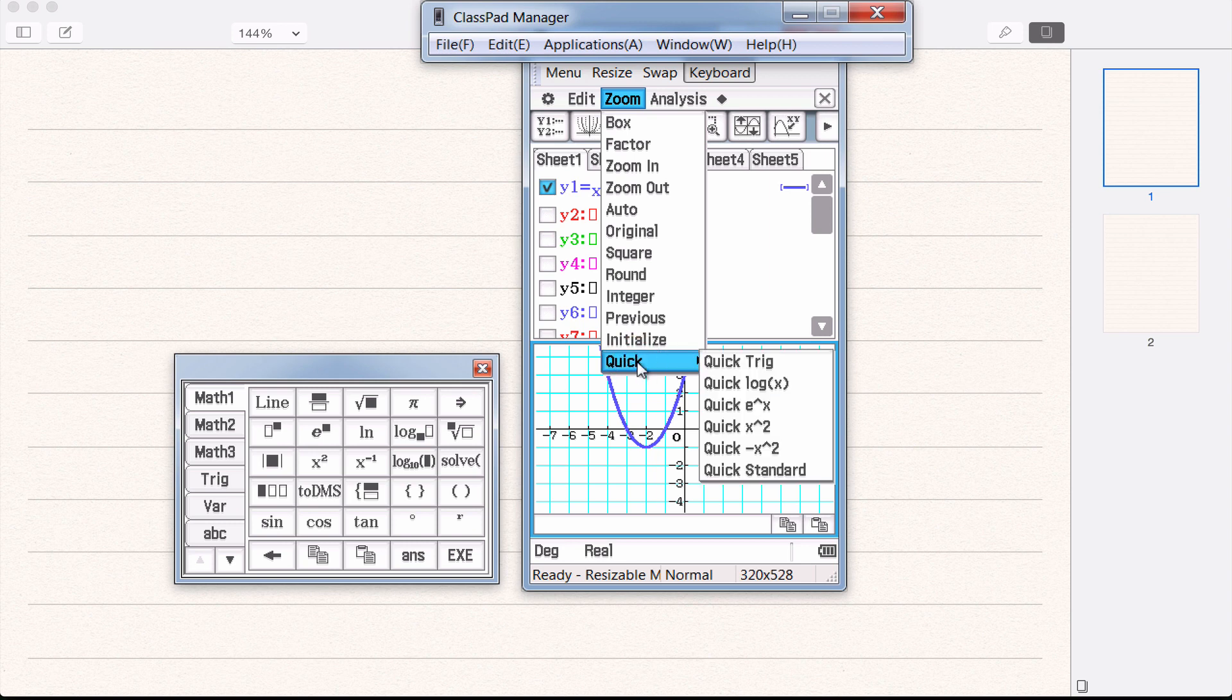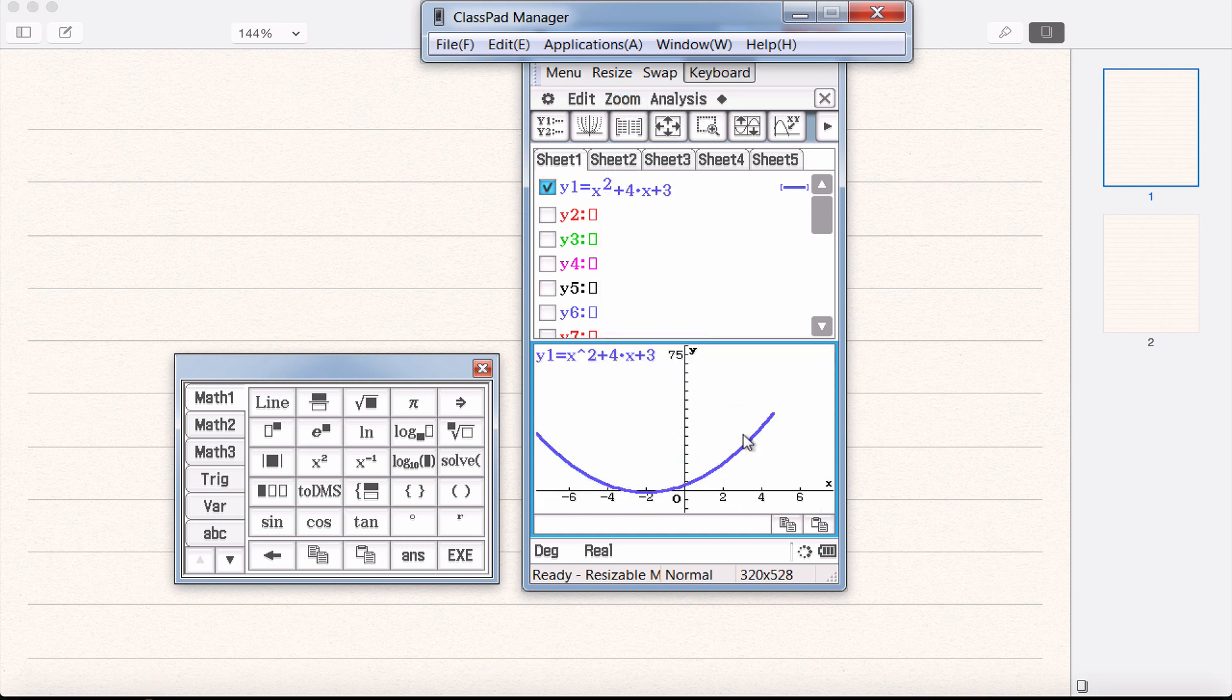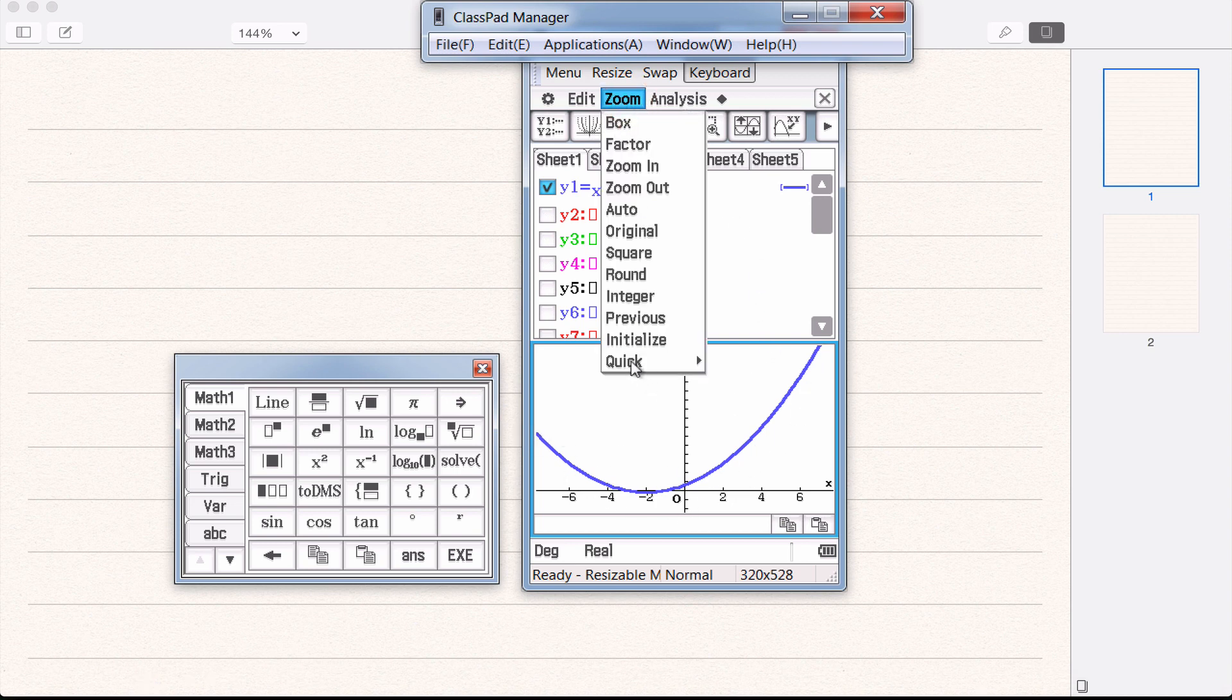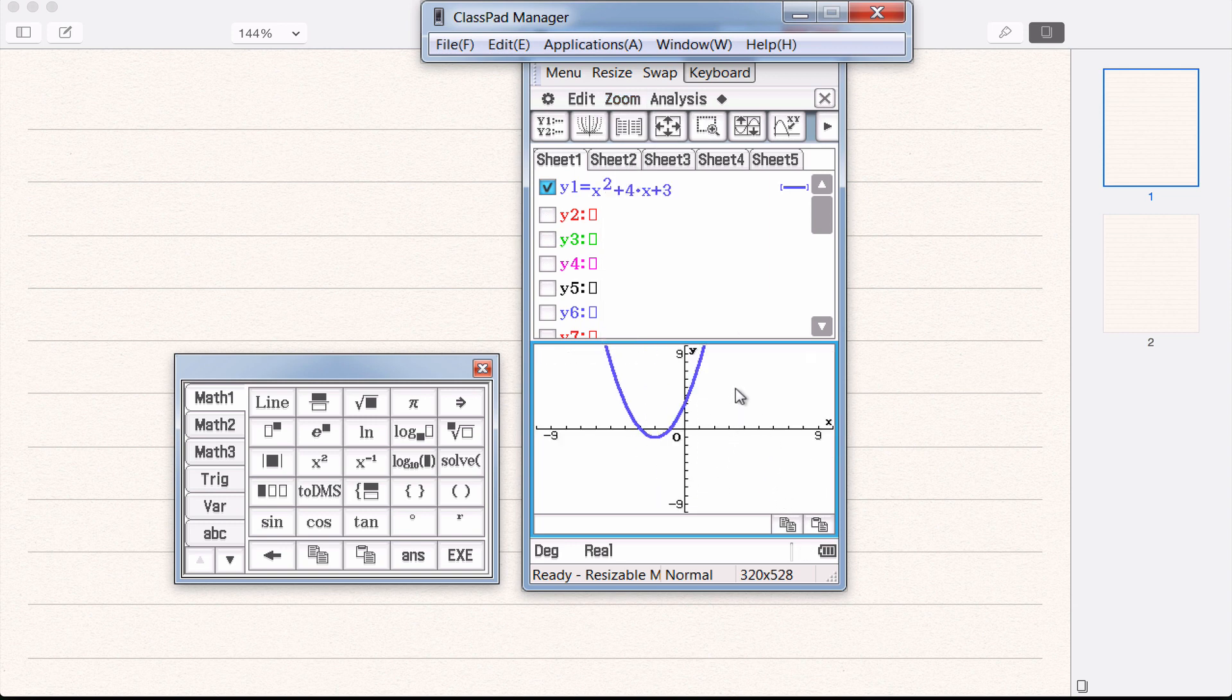Zoom quick is also useful when you know the type of function that you are graphing. And the ones we would be using would be the x squared function or the negative x squared function. This one is an x squared, it's not a negative parabola, it's positive. It's a happy smiley face. So we can click zoom quick x squared and it will try and fit it to the screen. Zoom quick standard down the bottom will also take you back to a standard view. So you can use any of those to zoom in and out and make sure you can see different parts.